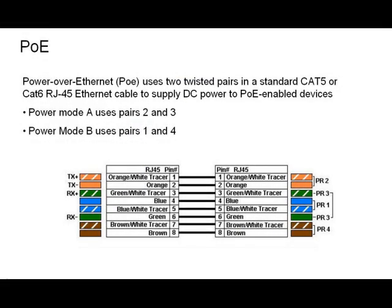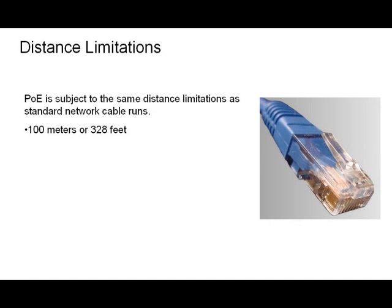PoE uses two twisted pairs in any standard CAT5, CAT5E, or CAT6 RJ45 Ethernet cable to supply DC power to PoE-enabled devices. Power over Ethernet is subject to the same distance limitations as standard network cable runs. PoE devices should not be located more than 100 meters or 328 feet from their power source.